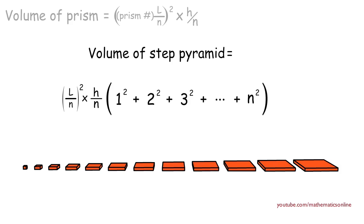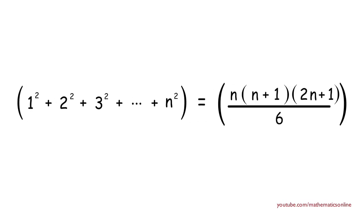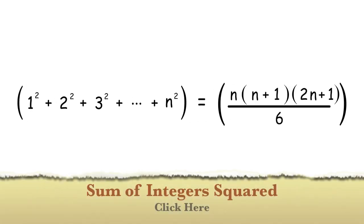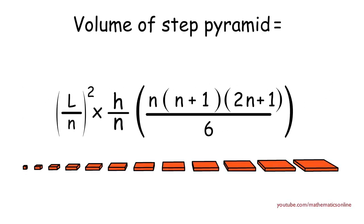Now let's concentrate on the sum of integers squared. This formula represents a series containing an arbitrary amount of terms. Amazingly, this series can be represented by a single formula. To understand why, please click on the link where I provide a geometric understanding for this formula. We now replace the sum of integers squared with n(n+1)(2n+1) over 6.